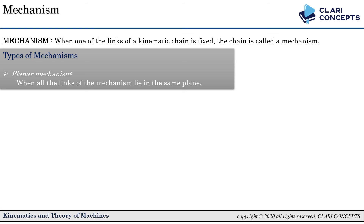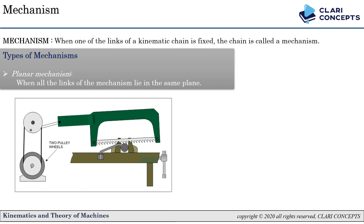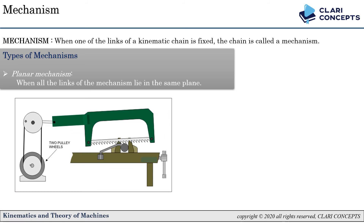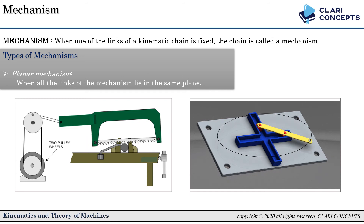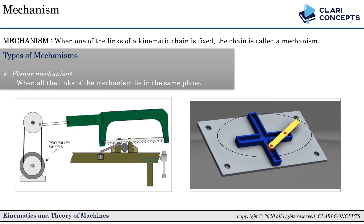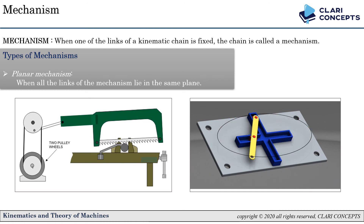A planar mechanism is one where all links lie in the same plane. For example, a cutting machine where all motion takes place in a single plane is a planar mechanism. Another example is the elliptical trammel, which is an inversion of the double slider chain — all motion occurs in the same plane, so it is also classified as a planar mechanism.